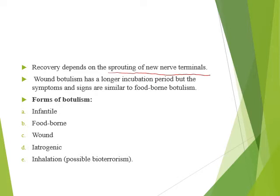Forms of botulism include wound botulism (with a longer incubation period), infantile/neonatal botulism, foodborne, iatrogenic, and inhalational (which could be part of bioterrorism). Raw honey may contain Clostridium botulinum and cause infantile botulism. A clinical case was described: a child who presented with internal and external ophthalmoplegia and bulbar palsy, later developing weakness, with highly characteristic findings on repetitive nerve stimulation.